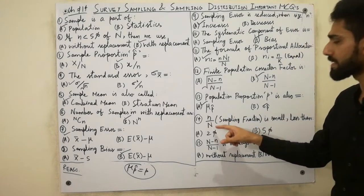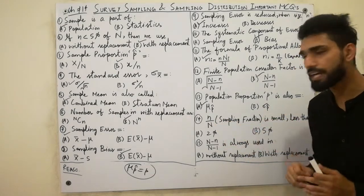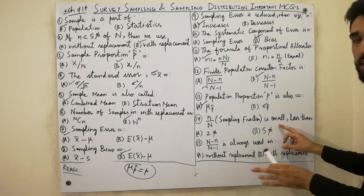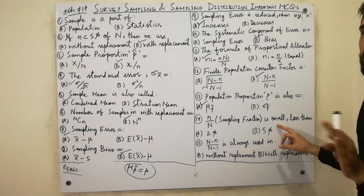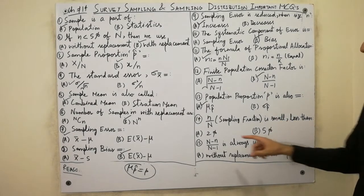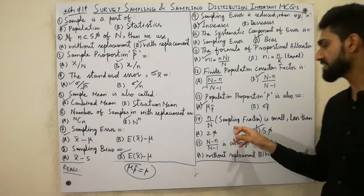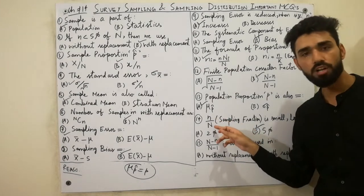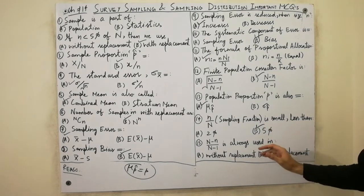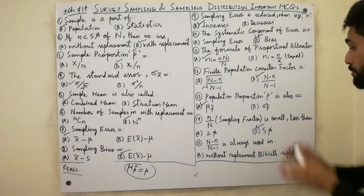Small n over capital N is the sampling fraction. Sampling fraction is always small and less than 5%. Must remember: the sampling fraction n over N is always small and less than 5% — this MCQ is very, very important.